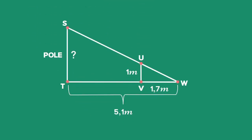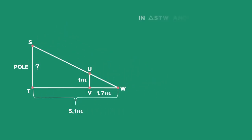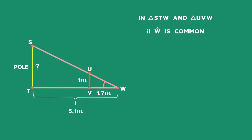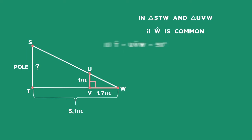We mark the given information on the diagram and see that to find the height of the telephone pole, we need to prove that triangle STW is similar to triangle UVW. In triangle STW and triangle UVW, angle W is common to both triangles. Angle T is equal to angle V, equal to 90 degrees, as both the pole and stick are perpendicular to the ground.